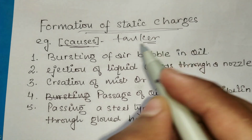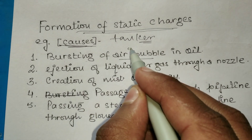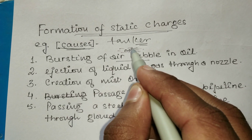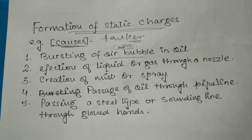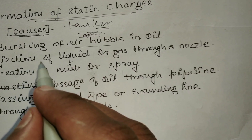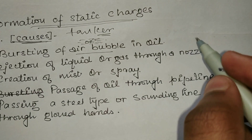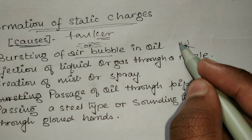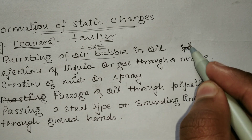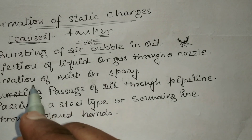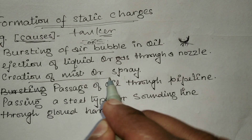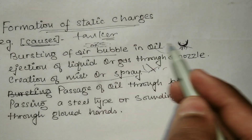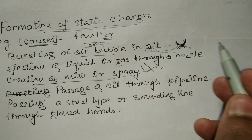The first cause is the bursting of air bubbles — air bubbles bursting in oil is a cause for the formation of static charge. The second cause is ejection of liquid or gas through a nozzle, which is another cause for the formation of electric charge. The third cause is the creation of mist or spray after ejection, which may cause mist around the tanker.